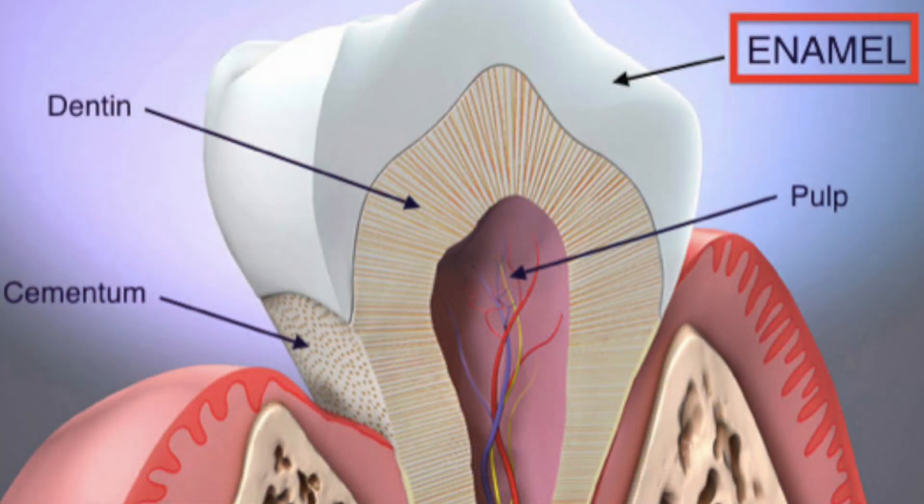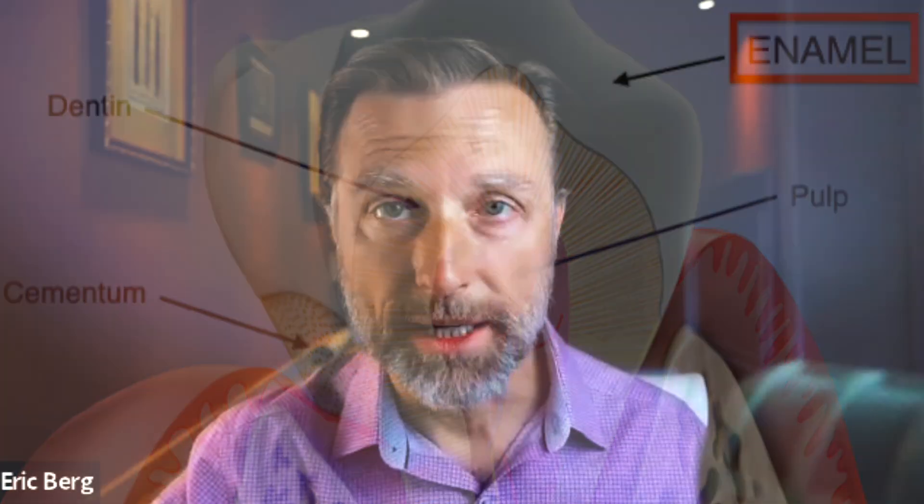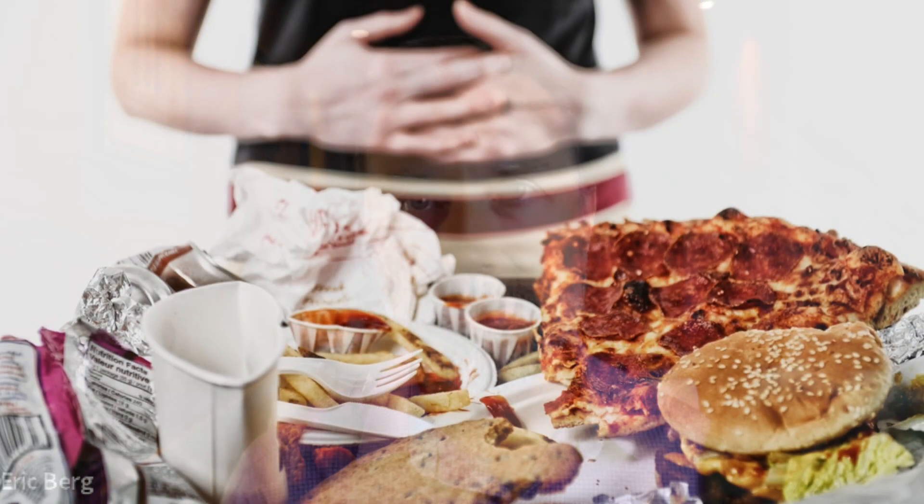Let's talk about the worst drinks that can dissolve your teeth — specifically dissolving your enamel. Enamel is a very complex substance; it is the hardest substance in your entire body, harder than bone. The jaw bone is the hardest of all the bones. So the question is, what has the capacity to dissolve this enamel and give you cavities?